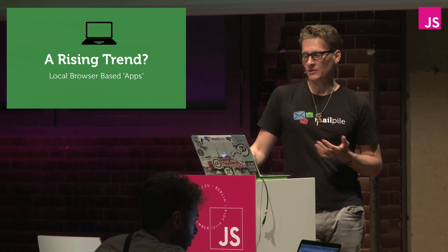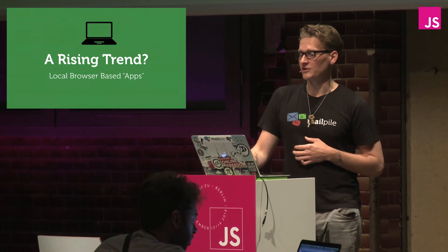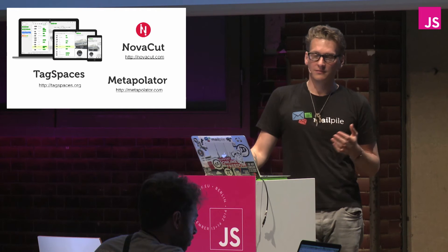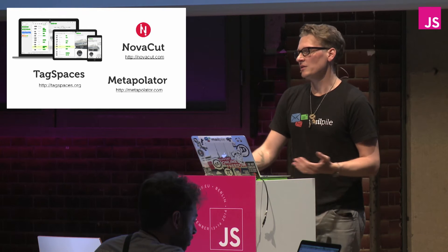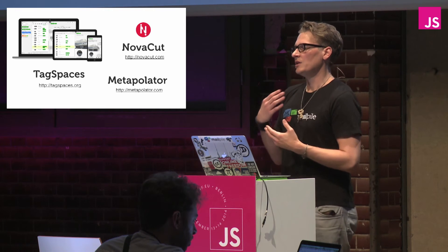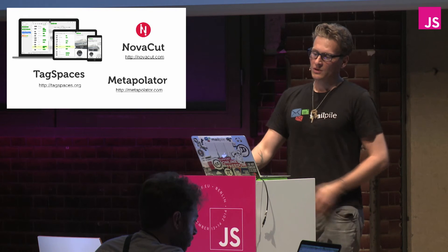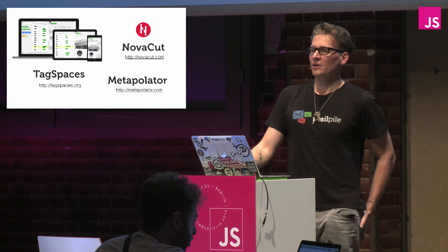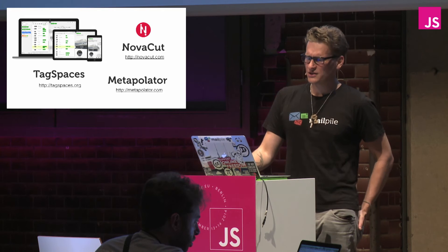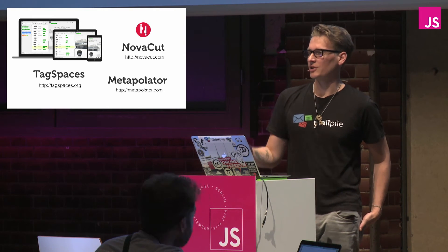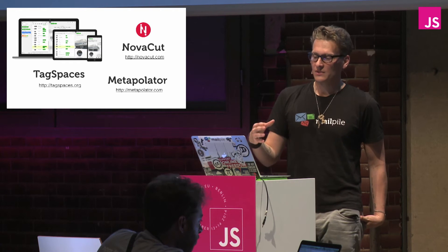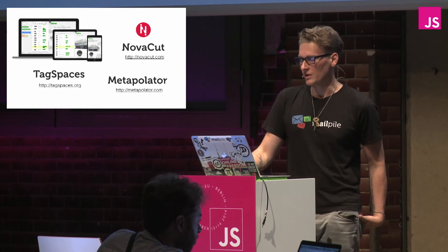There's a rising trend of local browser-based apps doing this — we're not the only ones. One is called TagSpaces, which is a great way to organize your files on your computer, giving you a power-user way of browsing pictures, tagging them, sharing them, and archiving them. Novacut is a really cool collaborative film editing platform, and Metapolator is going to be a font creation app. Metapolator is built on Hoodie and TagSpaces is also a note app, so there are definitely people in the JS community interested in this — two out of those three are written with JavaScript back ends.